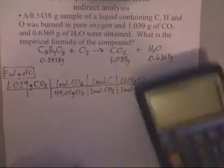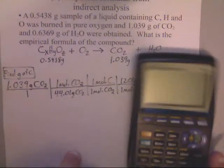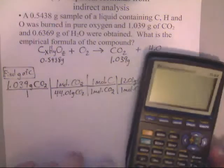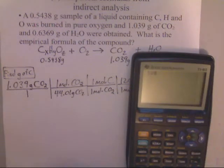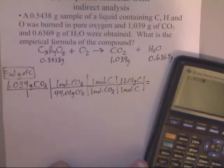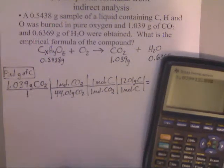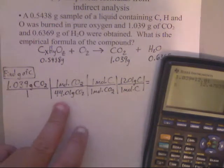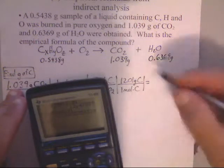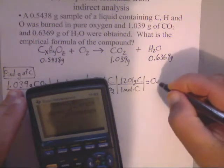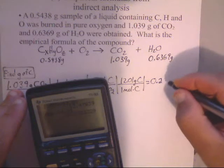Now, when I did that, I ended up getting, on the calculator, let's see what we get. I ended up getting 1.039 times 12.01 divided by 44.01. And I've got to keep 4 sig figs. So I ended up getting 0.2835 grams of carbon. So I've got that one so far.